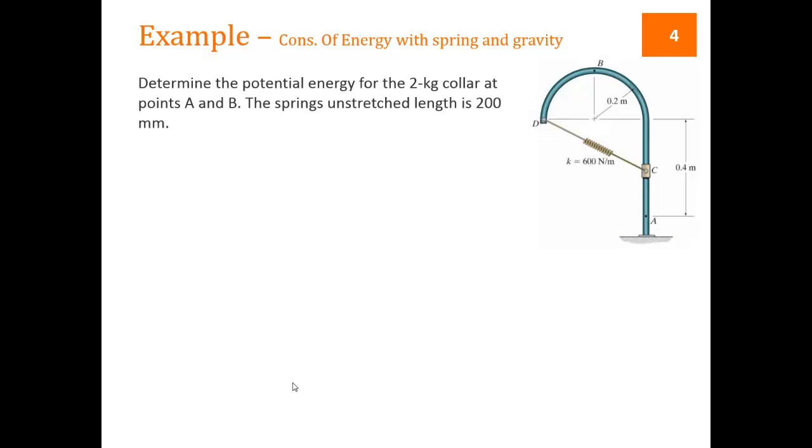Let's take a look at an example. We need to determine the potential energy for this 2 kilogram collar at points A and B. We know that the unstretched length of the spring is 200 millimeters or 0.2 meters. Let's look at point A first. First of all, we need to pick a datum. I'm going to pick a datum down here at point A, which makes the gravitational potential energy at point A zero, which is a convenient point to pick.